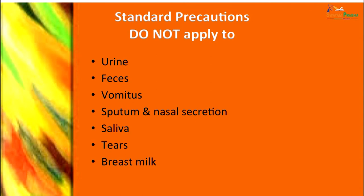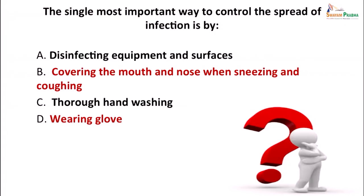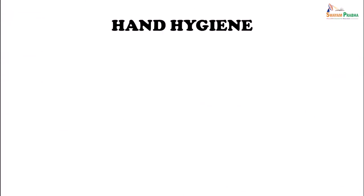One thing to understand: standard precautions do not apply to specimens like urine, feces, vomitus, sputum, saliva, tears, or breast milk — they apply mainly to blood and blood-stained fluids. The single most important way to control the spread of infection is by disinfecting equipment and surfaces after use, covering the mouth and nose when sneezing and coughing, thorough hand washing, and wearing gloves. These are very simple methods which can be done to prevent the spread of infection.